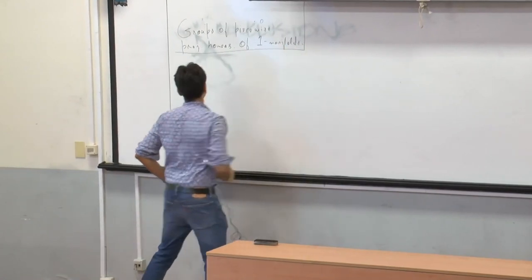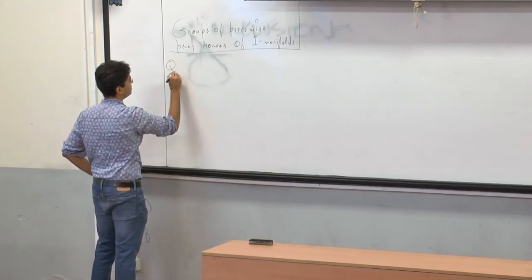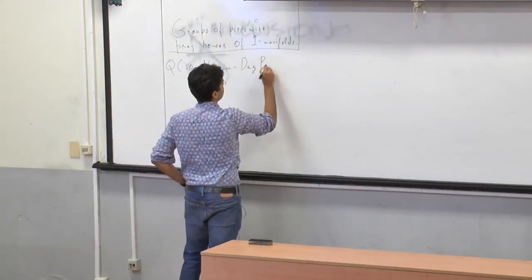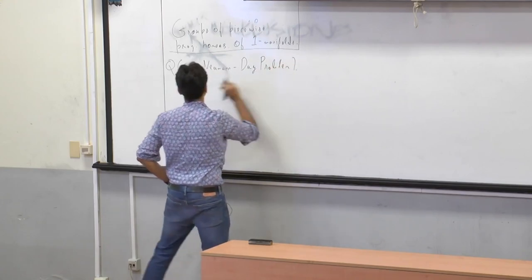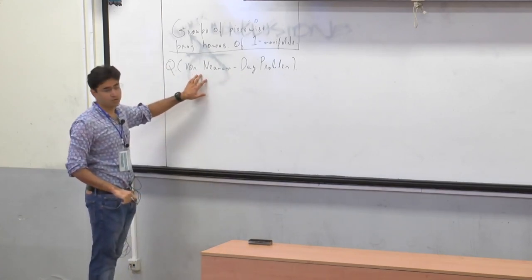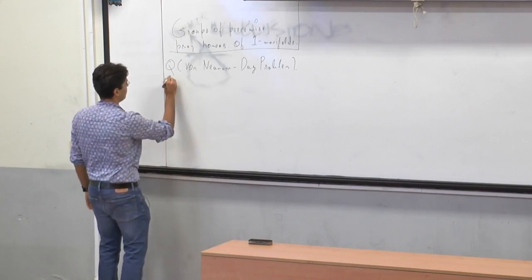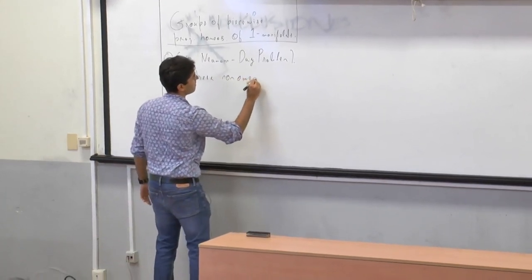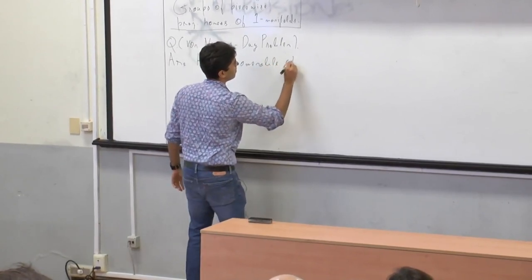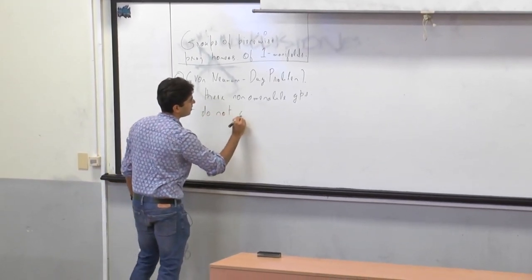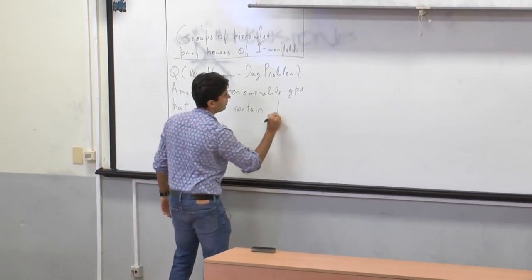I'll start with a question which goes back to the 1950s, called the Von Neumann-Day problem. It's a question asked by Mahlon Day in the 1950s, and he attributed it to Von Neumann. The question asks: are there non-amenable groups that do not contain F₂ — that do not contain the free group of rank two?